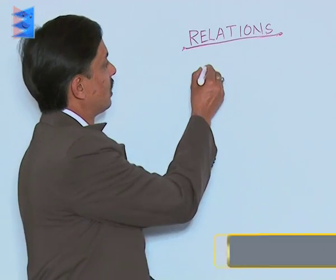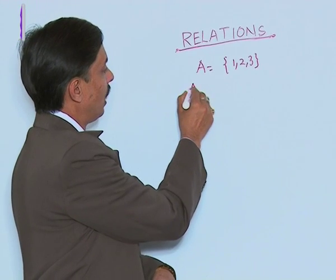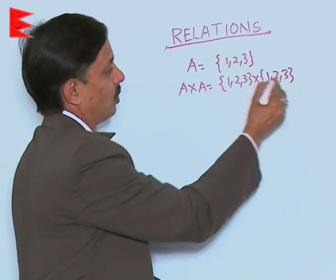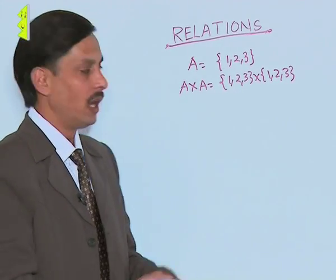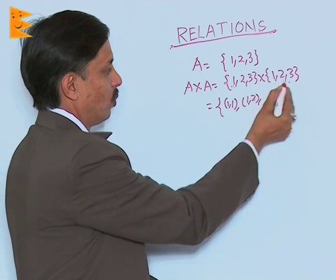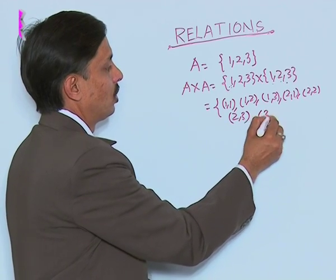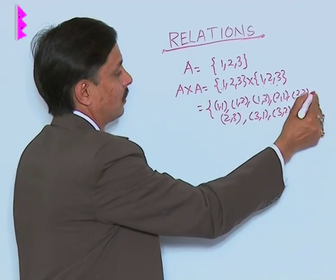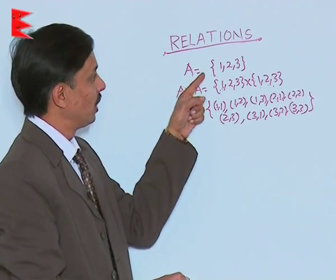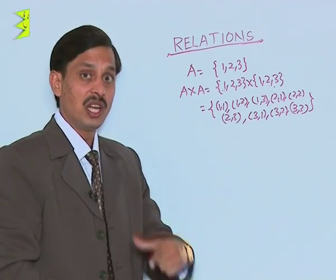Now, if I have a set A, suppose elements are {1, 2, 3} and I say find A cross A. So, you will simply say that A cross A means {1, 2, 3} cross itself {1, 2, 3}. {1, 2, 3} cross {1, 2, 3} it becomes (1,1), (1,2), (1,3), then (2,1), (2,2), (2,3), next is (3,1), (3,2) and (3,3). So, A cross A is this set having how many elements? 9. Reason: because in the set A there are 3 elements 1, 2, 3. A cross A means {1, 2, 3} cross {1, 2, 3}, there are 9 elements present in the form of ordered pair.